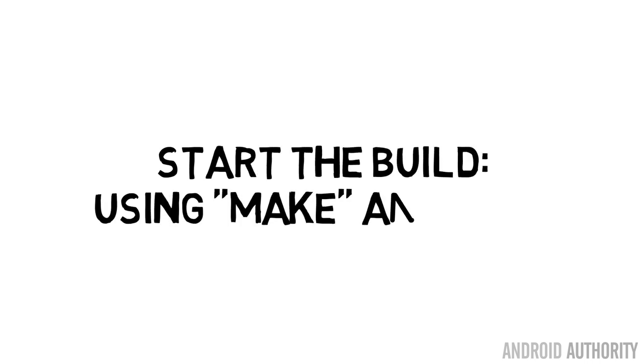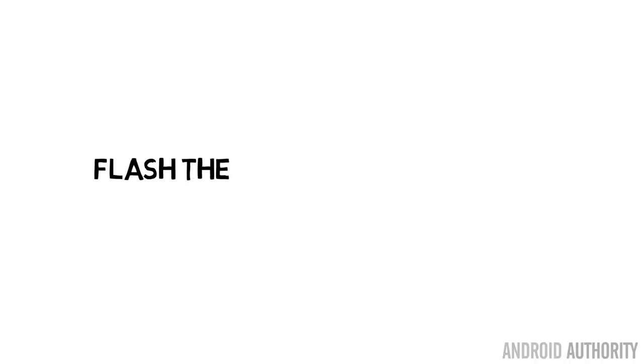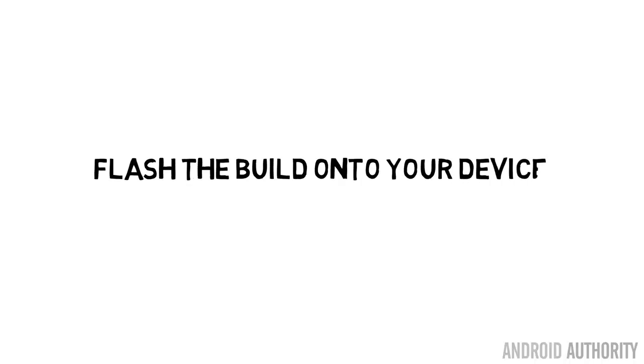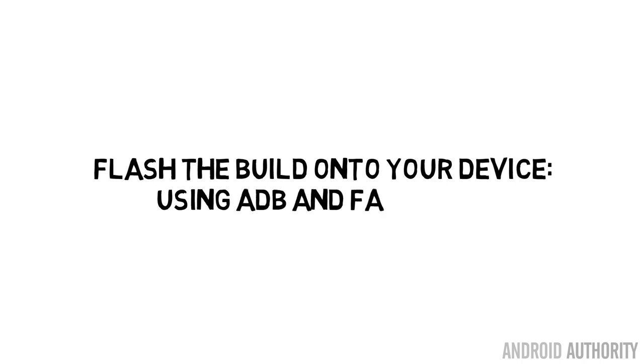Then once that's all set up, you can go ahead and start the build process using make. Again, this process can take quite a while — several hours — depending on the performance of your machine. So be prepared to let this thing churn away in the background until it has finished building the whole project. Then once you have a built firmware and you get a success from that make command, you need to make sure that your bootloader is unlocked on your Nexus device, and then you can flash over the new ROM onto the device.